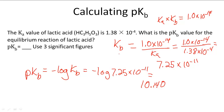When it says to use three significant digits, the '10' counts as one significant digit, and then one, two, three — these decimal digits count as the three significant digits. The '10' does not count as a significant digit on its own because it must be there, so the answer is 10.140.